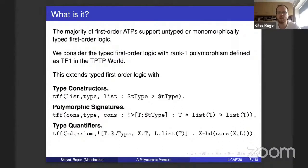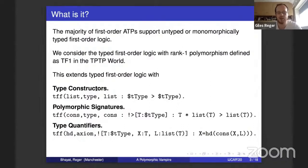This logic is rank-one polymorphism, known as TF1 in the TPTP world. It extends typed first-order logic with type constructors — for example, a list type constructor which takes one type. This makes our problem signatures polymorphic: we can have a cons function polymorphic in its input type, and in our problems we can now quantify over types.